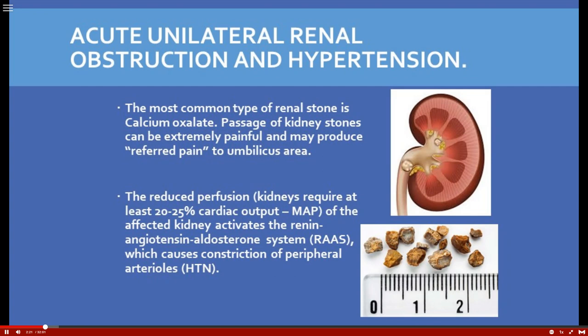An obstruction decreases perfusion to the kidney. We know the kidneys expect 20 to 25 percent of cardiac blood flow. Because of the obstruction — in this case kidney stones — the kidneys sense decreased perfusion and activate the renin-angiotensin-aldosterone system, causing constriction of peripheral arterioles and therefore hypertension.